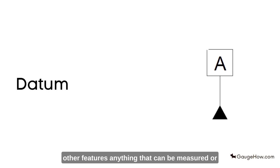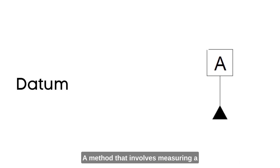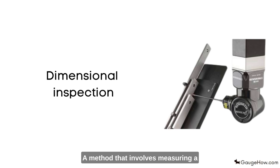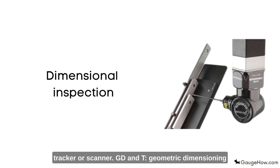Anything that can be measured or established for use in locating other features. Dimensional Inspection: A method that involves measuring a part's dimensions by way of a 3D laser tracker or scanner.